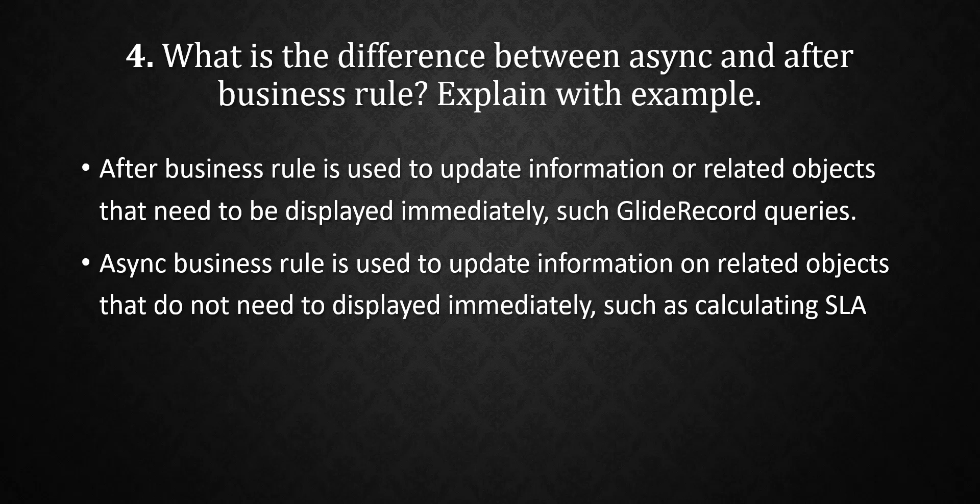Now the next question: what is the difference between an async and an after business rule? This is one of the most important questions — interviewers ask this very frequently. The answer is: an after business rule is used to update information on related objects that need to be displayed immediately, such as GlideRecord queries. An async business rule is used to update information on related objects that do not need to display immediately, such as calculating SLAs.